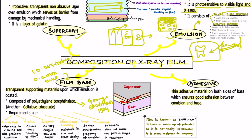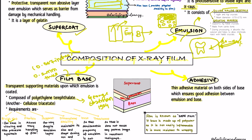The requirements of the film base are: first, it should have a bluish tint for ease of viewing and to prevent eye straining. Second, it should be flexible so that the film can be handled easily. Third, it should provide good support for the fragile emulsion layer. Fourth, it should be dimensionally stable — it should not change its size or shape during processing or use.